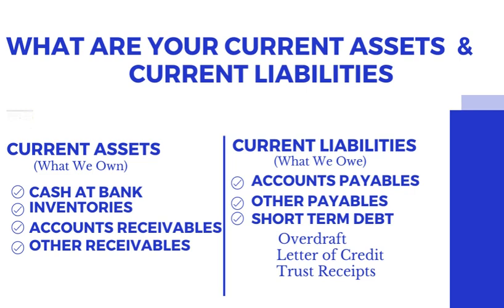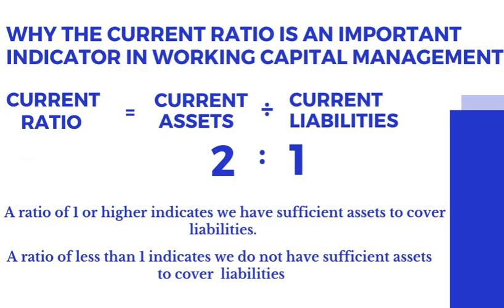Short-term debt comprises overdraft, letter of credit, trust receipts, etc. Why is the current ratio an important indicator in working capital management? If you divide the value of current liabilities into current assets, you come up with a ratio of current assets to current liabilities, which we call the current ratio.